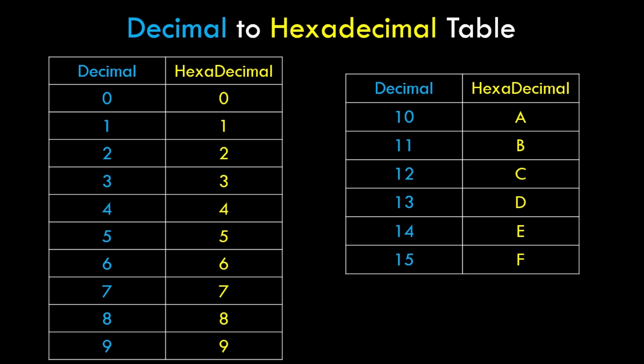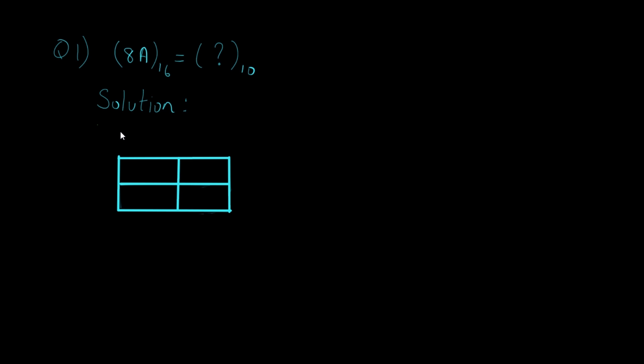So let's get started with the first sum. We have a hexadecimal number 8A which needs to be converted to a decimal number. Here is how it's supposed to be done. First, write down the number in the table as I have drawn. Now we need to assign positional values starting from right to left. The positional values start from 0 going right to left, so A is at position 0 and 8 is at position 1.